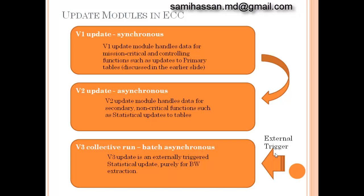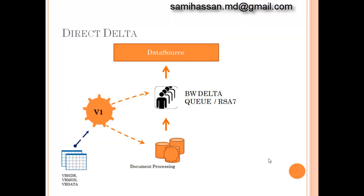First among the three delta types is Direct Delta. As the name suggests, it is a more direct method of updating BW's Delta Queue. In this method, the V1 process is given the additional responsibility of updating the Delta Queue along with the primary application tables. Data is fetched from the VB_HDR, VB_DATA, and VB_MOD tables, which act as temporary storage of user-entered data saved by the transaction screen before being posted to the application tables.